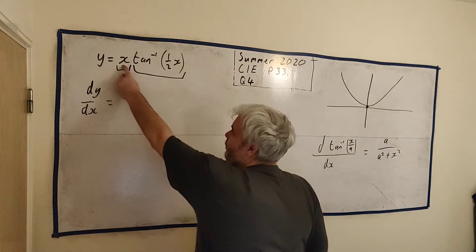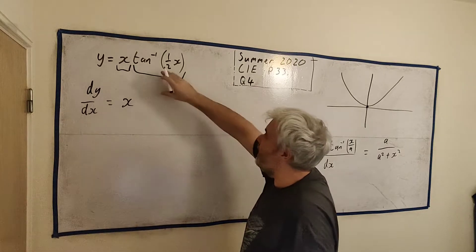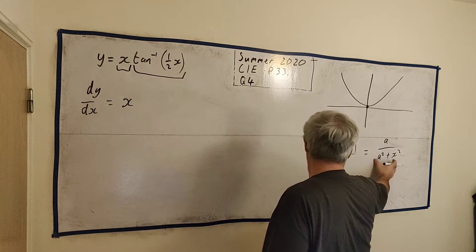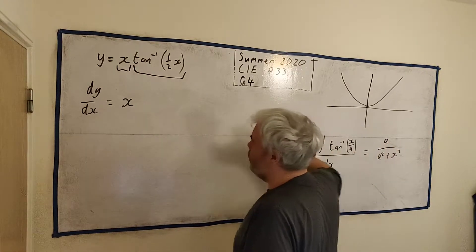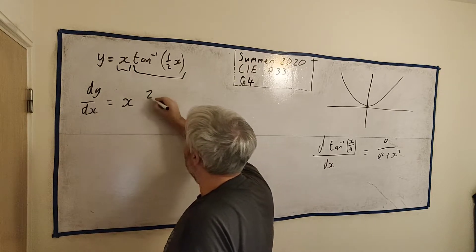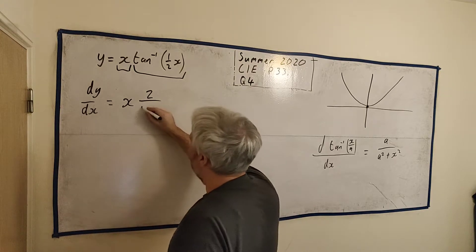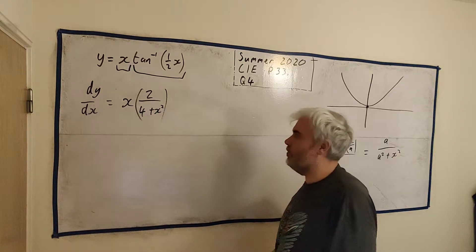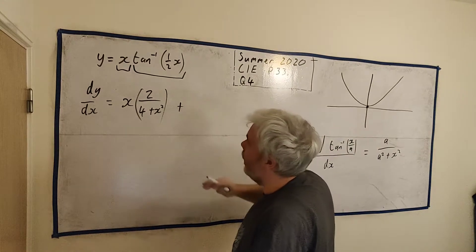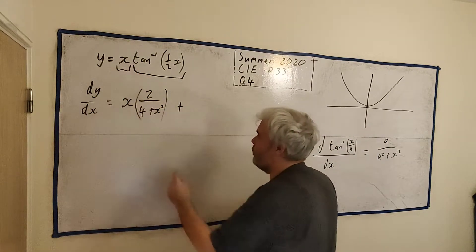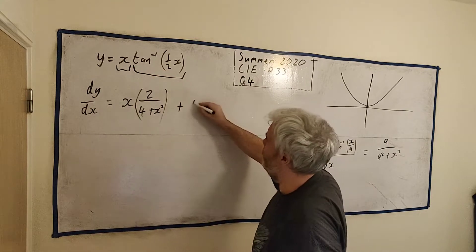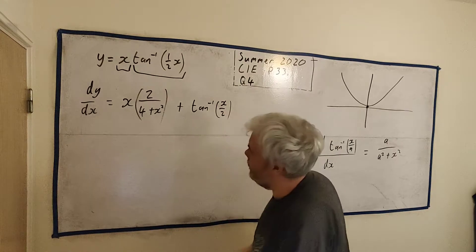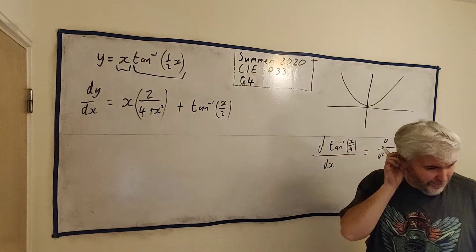Product rule: let's take the first one, x, leave it alone and differentiate the second one. It doesn't matter which way you do the product rule. So differentiate the second one. A is 2 in this case. So this is 2 divided by 2 squared is 4 plus x squared. Let's put a bracket there so we don't confuse that. And then let's do the opposite. Let's differentiate the first one, that's 1, and leave the second one alone. So that's the inverse tangent of x over 2.